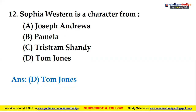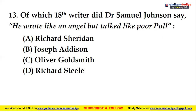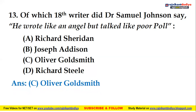Thirteenth question: Of which 18th-century writer did Dr. Samuel Johnson say 'He wrote like an angel but talked like poor Poll'? Options: Richard Sheridan, Joseph Addison, Oliver Goldsmith, or Richard Steele. The right answer is C, Oliver Goldsmith.